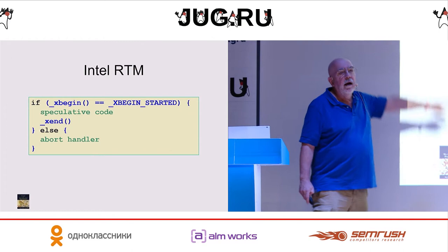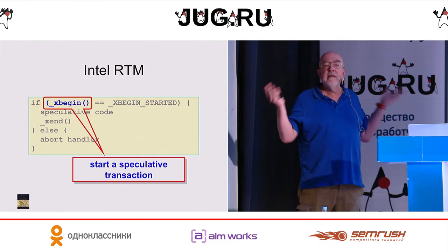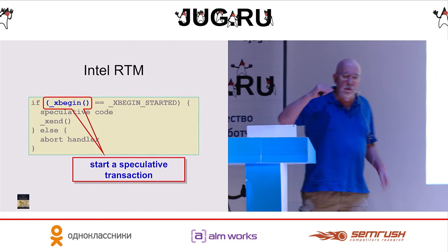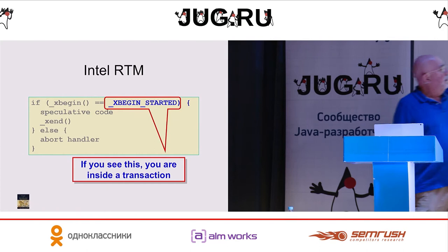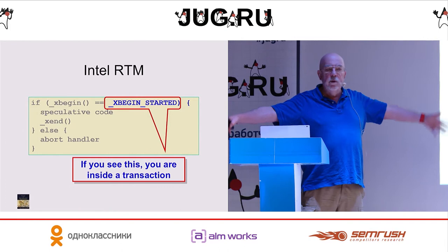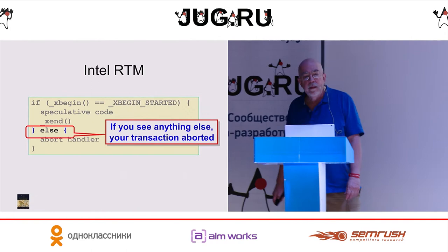There is a system call called xbegin — transaction begin. It has this weird meaning, a little bit like fork or vfork in Unix, where you call it and it comes back with a code. And if you see this code, this means you are executing a speculative transaction. When you see that, that means you go ahead and do what you need to do.